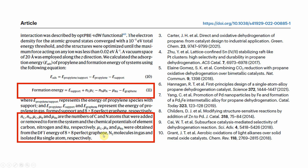mu_c energy was obtained from the 8×8 perfect graphene supercell. mu_n energy was obtained using the N2 molecule as the reference — they used the N2 molecule in the gas phase — and mu_Ru from the isolated ruthenium single atom respectively.